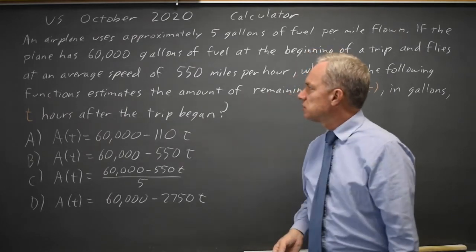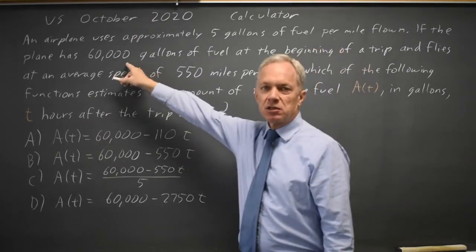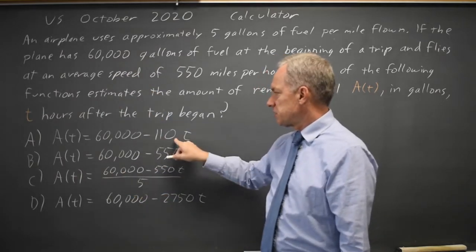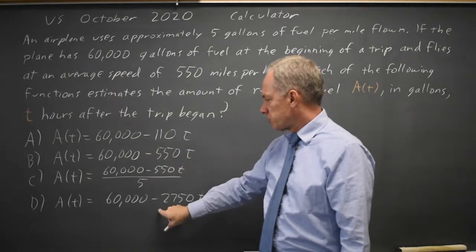First of all, at T equals 0, since we start with 60,000, the correct formula should give you 60,000. 60,000 minus 0 is 60,000. Same for B, same for D.